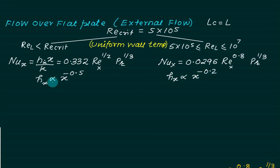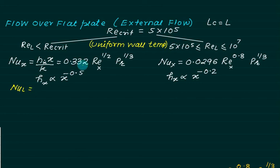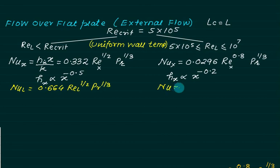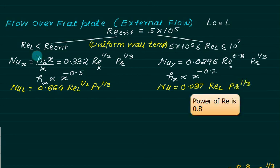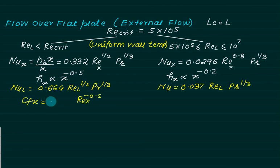This means that if you double the length, heat transfer is not doubled: in laminar flow h_x is proportional to x to the power minus 0.5, and in turbulent flow to x to the power minus 0.2. For the average Nusselt number in laminar flow, take the constant 0.332 and divide by the power 0.5 to get 0.664 times Re_L to the power 0.5 times Pr to the power 1/3. For turbulent flow, dividing 0.0296 by 0.8 gives 0.037, so Nu_L equals 0.037 Re_L to the power 0.8 times Pr to the power 1/3.